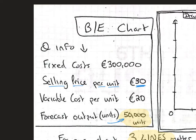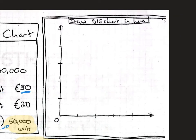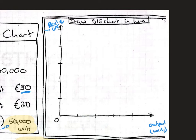I picked the total revenue line first because it's the best line to draw first. When we look at our axis, we measure revenue and cost in euros on the vertical axis, and the highest point will always be whatever your total revenue is at forecast output — in this case 50,000 units. We measure output in units on the horizontal axis. Don't forget to label both axes and put in your title: 'Break-even chart for [business name]'.